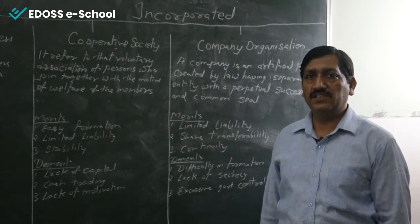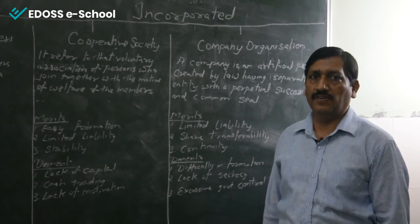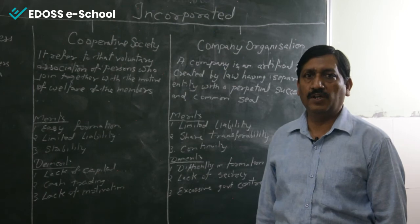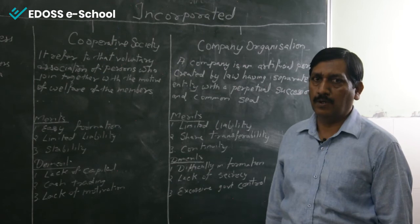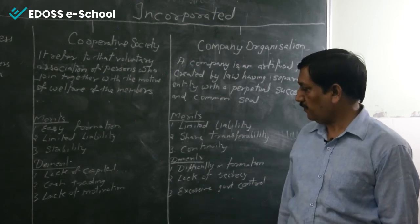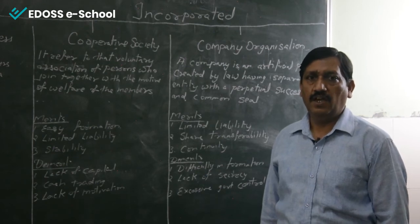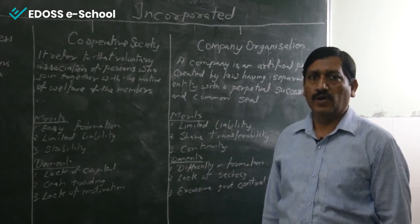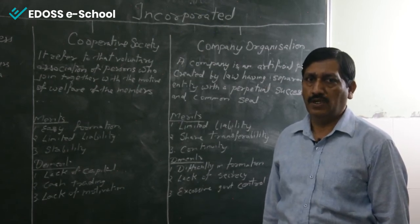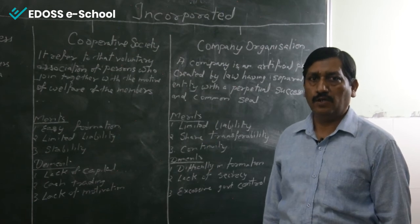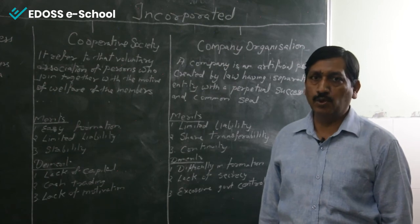Share transferability — you can buy the shares of the company and sell them in the stock market; you are not bound to stay with one company only. As many persons buy shares, they become members of the company. Continuity — the company keeps on continuing and does not close down unless it fails to fulfill the applicable laws, and it can only be dissolved by the government.